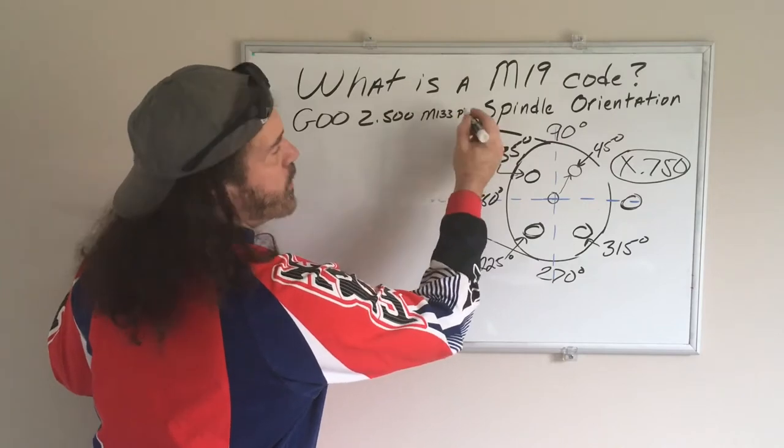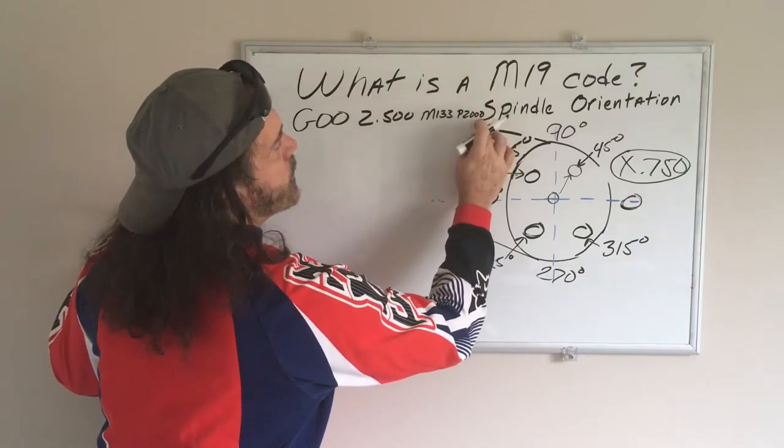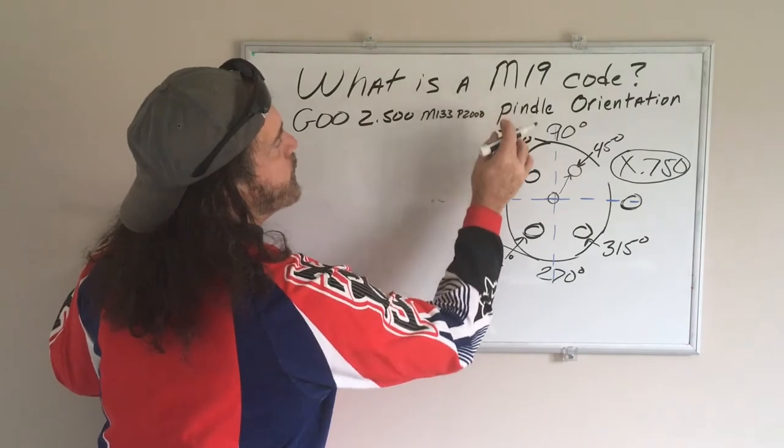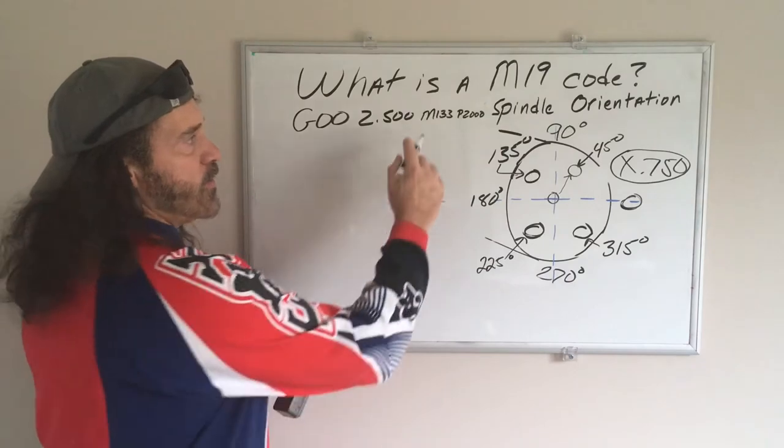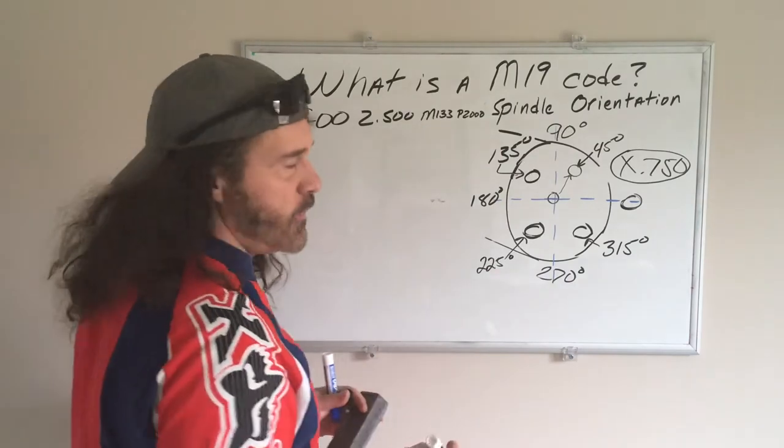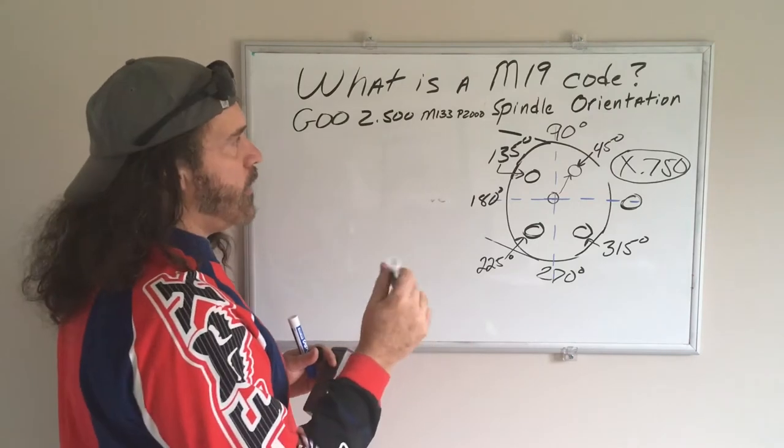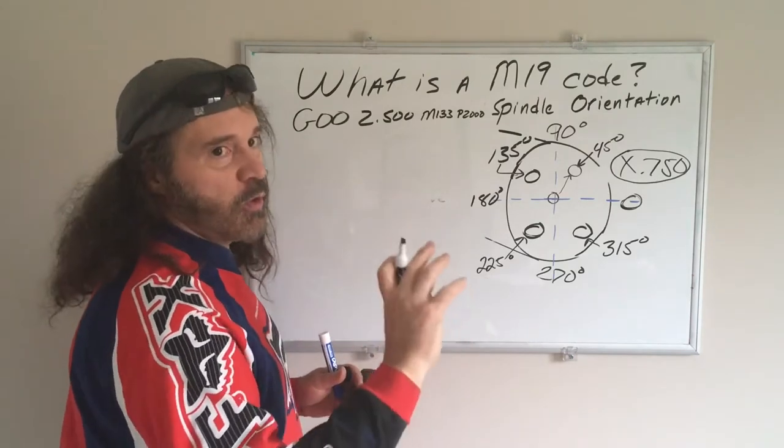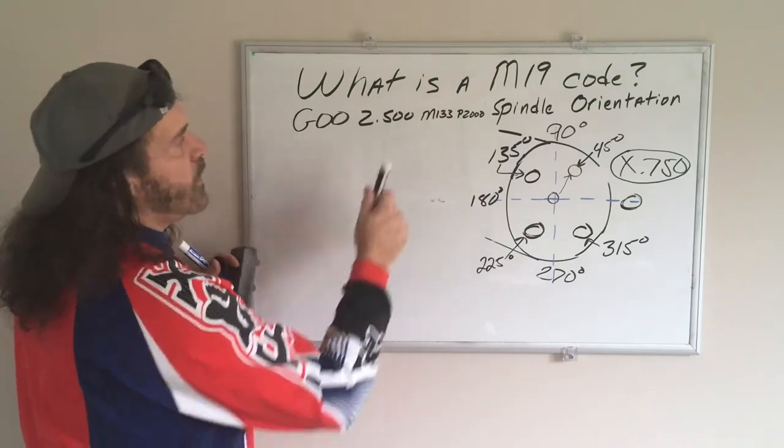So let's just get this out of the way. That's how you turn on live tooling. You need a P code, and M133 is forward, M134 is reverse, and M135 turns it off.